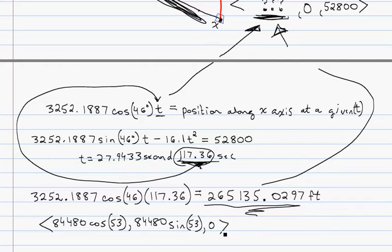And when we fire our missile to intercept the other missile, we're going to end. It's going to hit it at this point. 265,135, point, 0297, comma, 0, comma, 52,800.